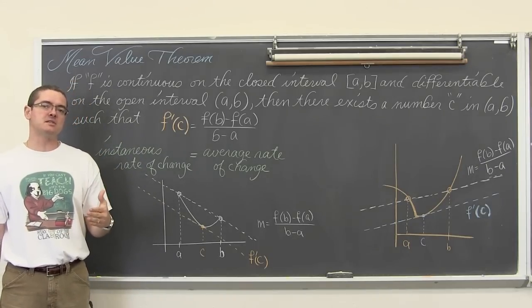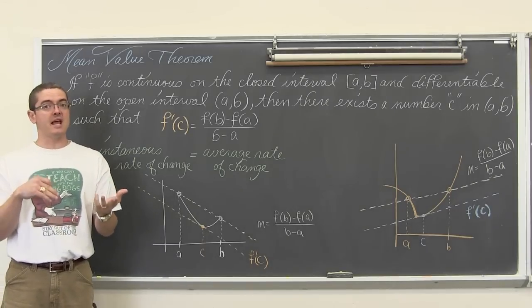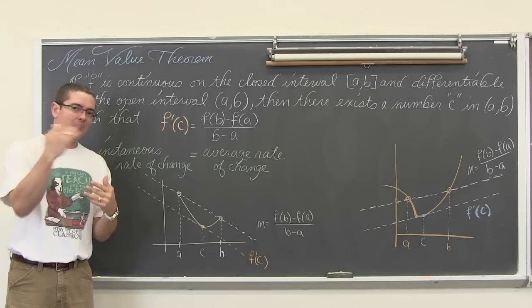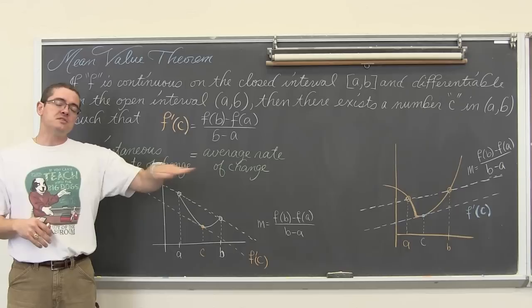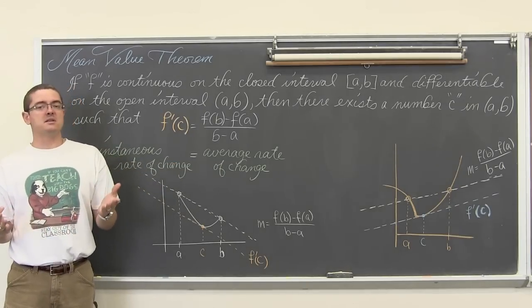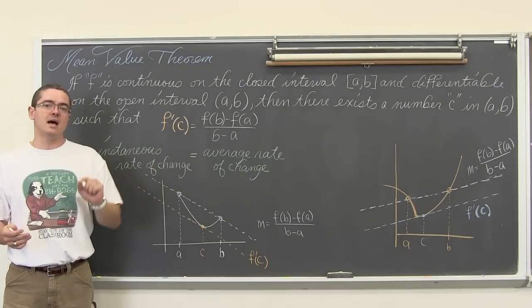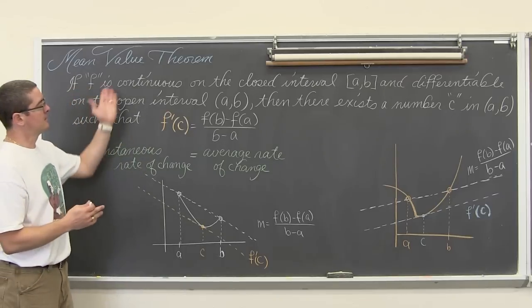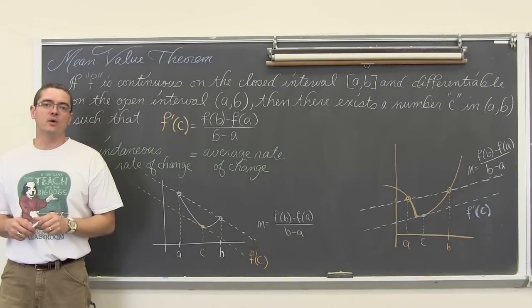Except where Rolle's theorem is specifically saying that if the function's value is the same at two values of a and b, then that would create a secant line which is horizontal. It says within that interval there is a value c that makes the first derivative equal to zero as well. Basically we are saying that if there is a horizontal secant line then somewhere within that interval we will find a horizontal tangent line if we have a continuous function and one which is differentiable.